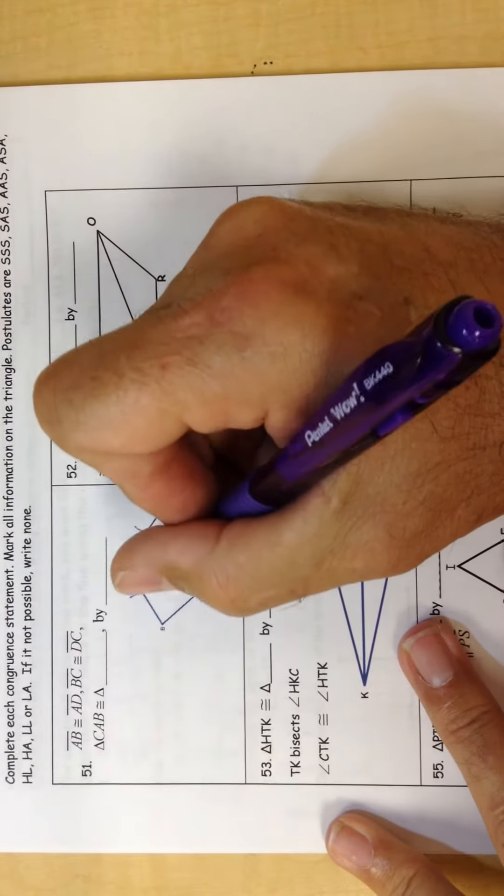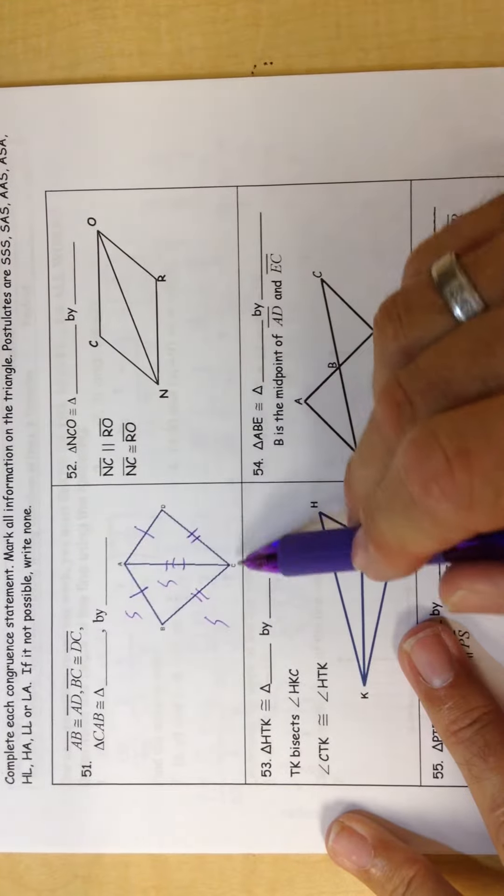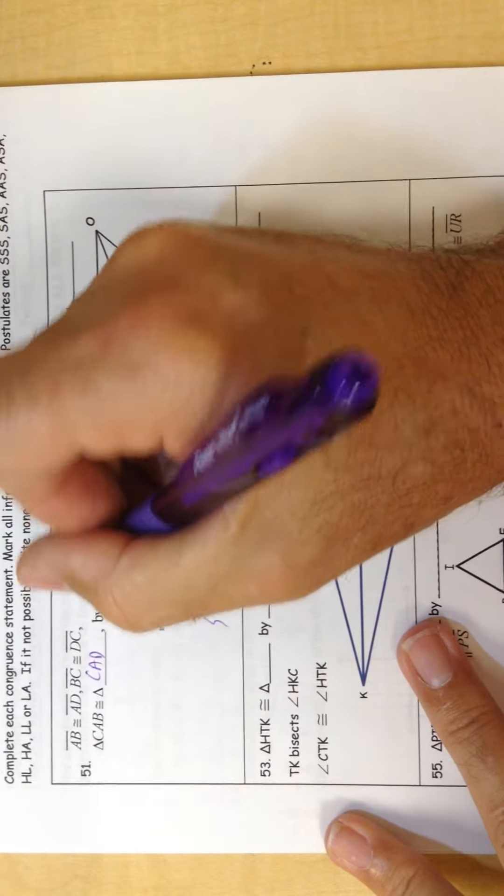This is going to be simple because they share a side. I have side, side, side, don't I? Okay, so triangle CAB would be congruent to CAD by side, side, side.